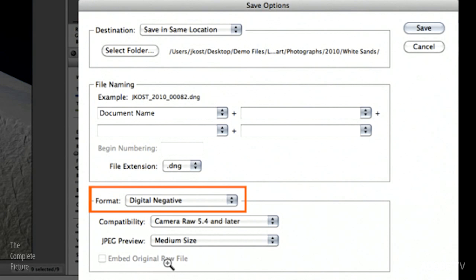And if we wanted to embed an original raw file, we could here too. It's not letting me at the moment, because I'm starting with DNG files. So it's kind of silly. So it grays that out.